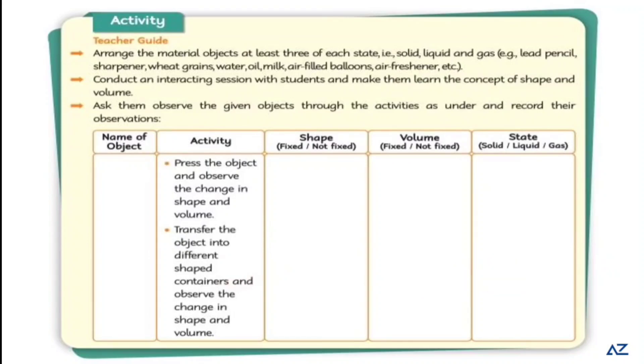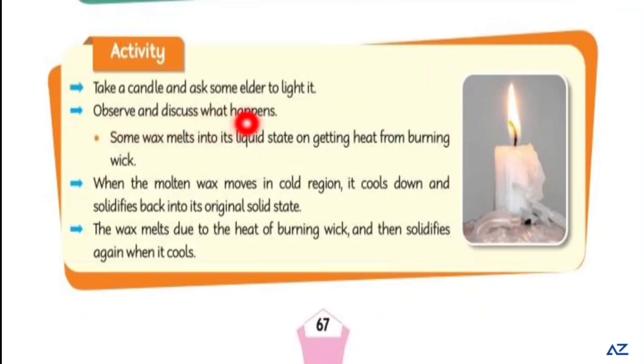Activity is to take a candle and ask some elder to light it. You will observe and discuss what is happening with the candle. Some wax melts into the liquid state on getting heat from burning wick. Now what is happening with burning? It melts and changes into liquid. When the molten wax moves in cold region, it melts when it is warm and in liquid form.